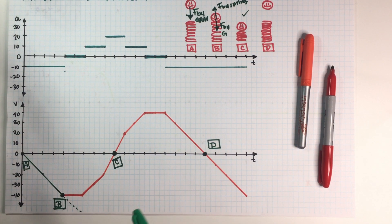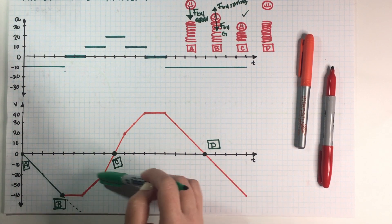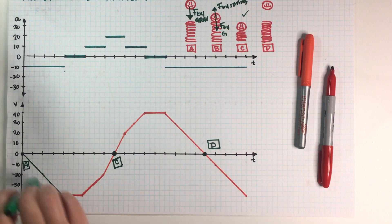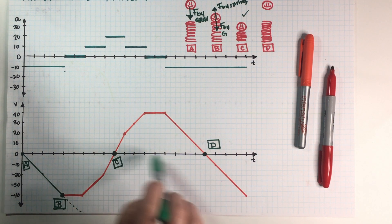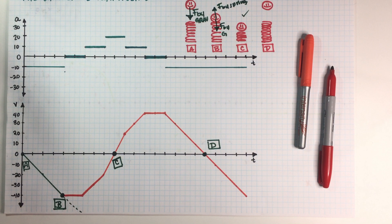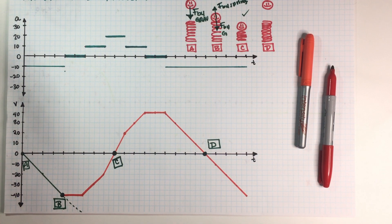So that solves the entire problem. We have a complete velocity graph and our points B, C, and D are well defined as the instructions told us. If you found this content helpful, please make sure to leave a like and subscribe — it really helps our channel. I'll see you guys in the next video.